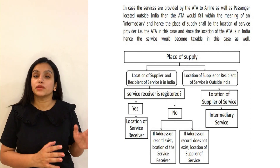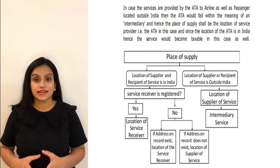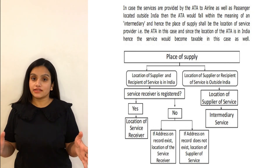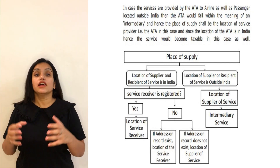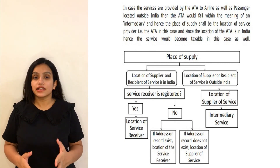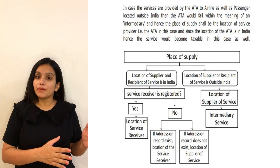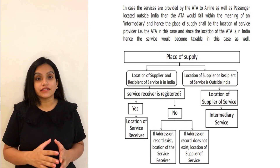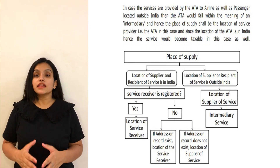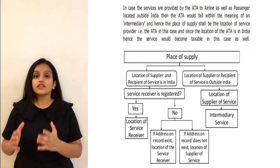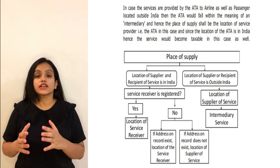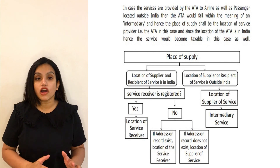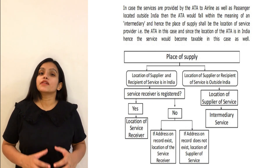There are three types of GST: for interstate sales, IGST is charged; and for intrastate sales, CGST and SGST are charged. Which GST to impose depends on the place of supply. If both the supplier and client belong to India and the client is registered under GST, the place of supply will be the client's registered address. If the client is not registered but their address is on record, the place of supply will also be the client's address.